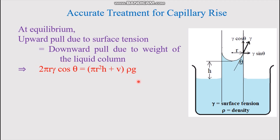The downward pull is due to the weight of the liquid column. If the volume of the cylindrical part is πr²h, then the weight is V·ρ·g. There are two volume contributions: the cylindrical part πr²h and the volume of liquid within the curved meniscus, V. So the total downward pull is (πr²h + V)·ρ·g. At equilibrium, the upward pull equals the downward pull.